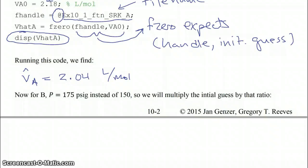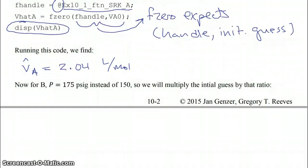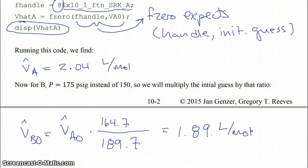So we have to have another initial guess for B. Now it's probably sufficient just to use the same initial guess and it'll probably converge into the right thing. But to be precise what we're going to do is we're going to use the same kind of initial guess, just the ideal gas law guess for the molar volume of B. Now note for B the pressure is 175 psig instead of 150. So we're just going to multiply our previous initial guess by the ratio of these two pressures to get our molar volume of gas B. So we have the molar volume of B initial guess is equal to the molar volume of A initial guess times the ratio of the two pressures 150 psig and 175 psig. And that gives us an initial guess of 1.89 liters per mole for gas B.